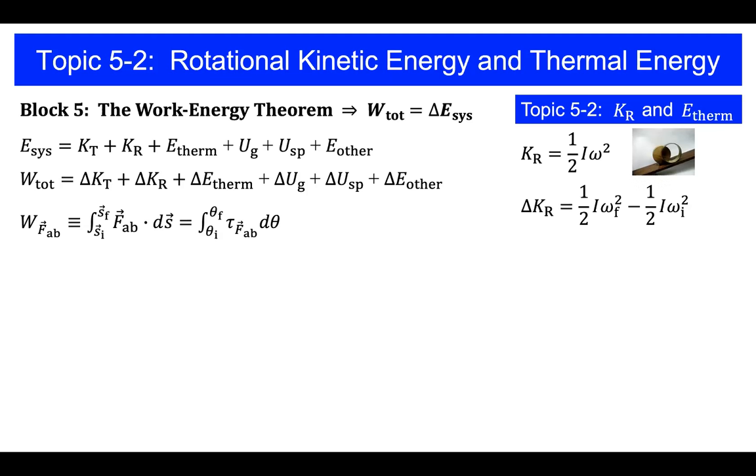And if the system is rotating with an initial angular speed omega I and then it evolves over time and rotates with a final angular speed omega F, the change in rotational kinetic energy is just the difference in its final rotational kinetic energy related to its initial rotational kinetic energy.